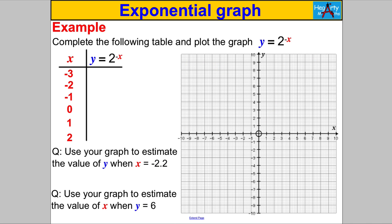Now let's try another graph: y = 2^(-x). Pause the video and fill in the table. For x = -3: 2^(-(-3)) = 2^3 = 8; x = -2 gives 4; x = -1 gives 2; x = 0 gives 1; x = 1 gives 0.5; x = 2 gives 0.25. Plotting these, we can see it looks like y = 2^x but reflected in the y-axis.